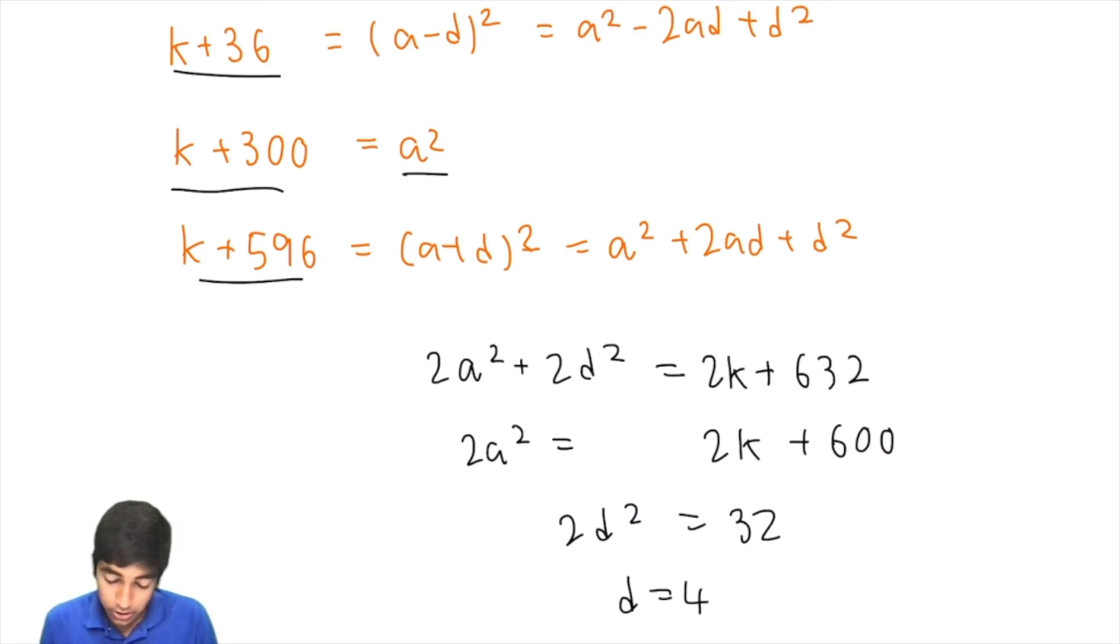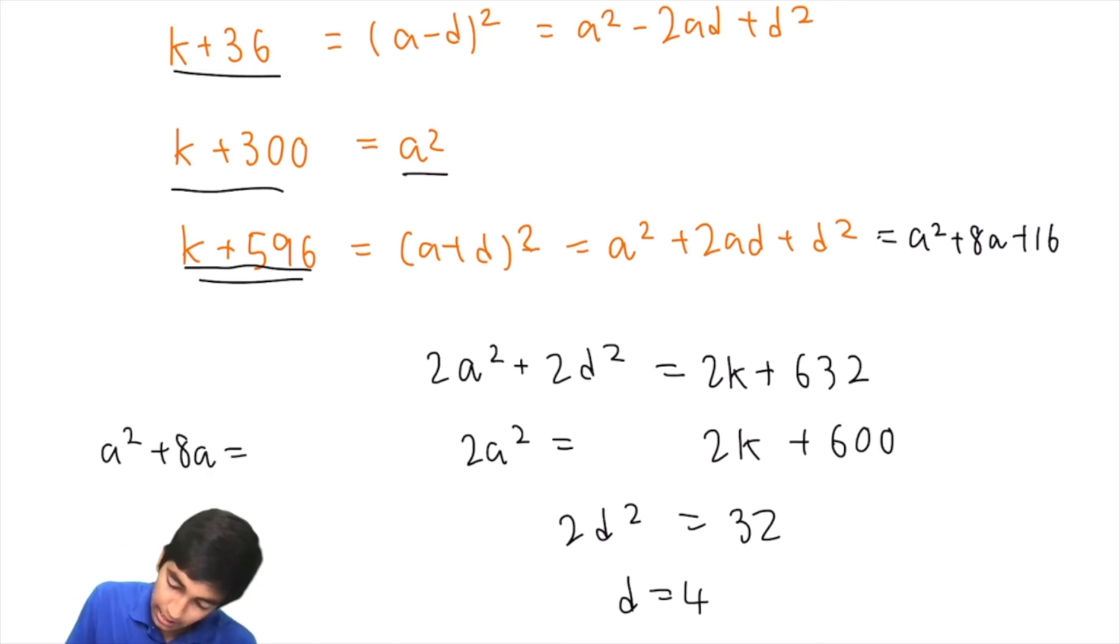So now we know the value of d. If we know the value of d, can we maybe plug it in somewhere to help us? Let's plug it in here. This is a squared plus 8a plus 16 equals k plus 596. So, a squared plus 8a equals k plus 580.